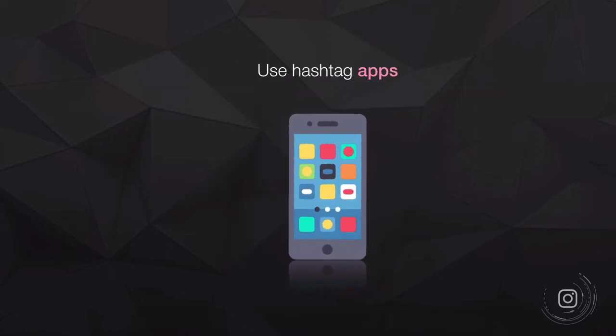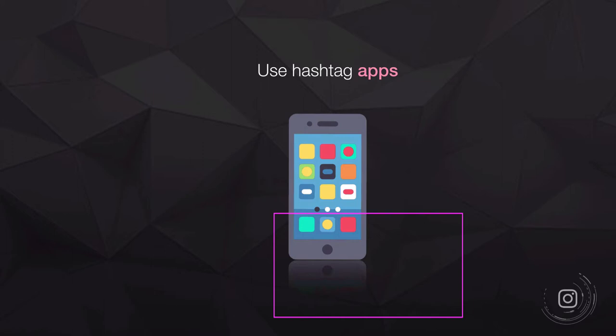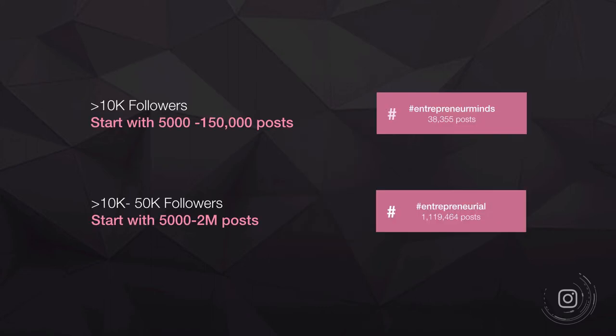You can also use hashtag apps. There are many available, but specific recommendations are hard to make since Instagram keeps updating their terms of service. Just go to the Play Store or App Store and type in 'Instagram hashtag' or just 'hashtag.' You'll get an array of apps to help you find the best hashtags in your niche — test them out manually and see which you like.